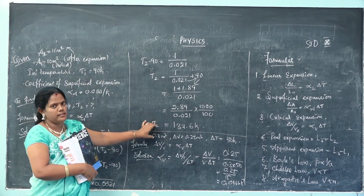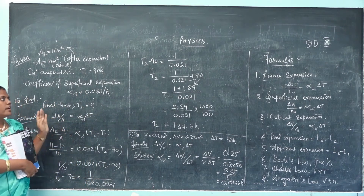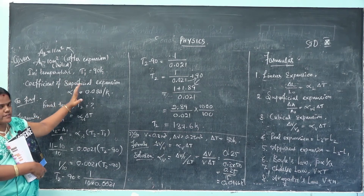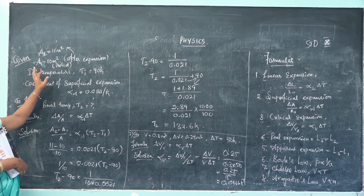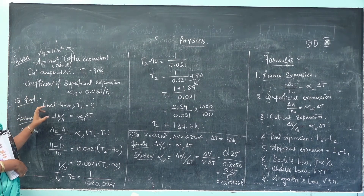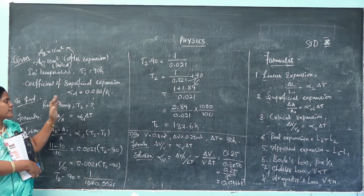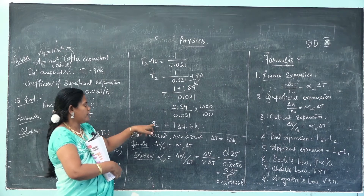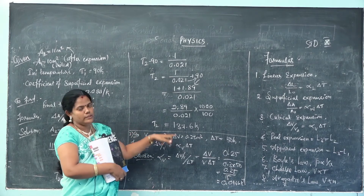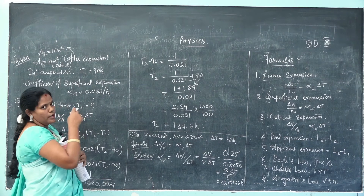In summary, T1 was given and T2 was found. The area values A1 and A2 were taken and the formula delta-A by A equals alpha-A into delta-T was applied. Substituting all values and solving using LCM gives T2, the final temperature. I hope you all understood this problem.